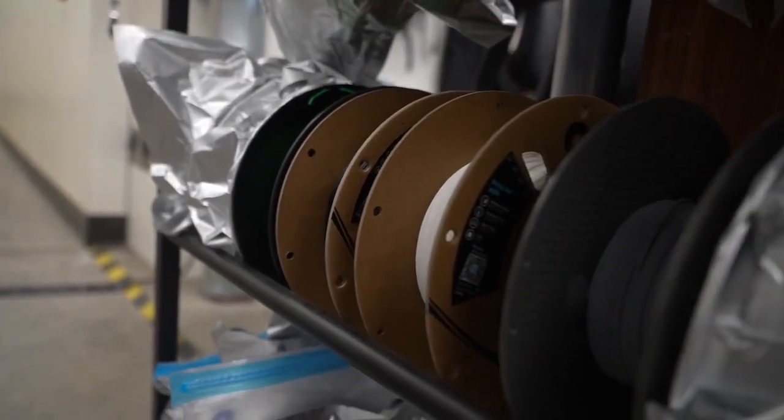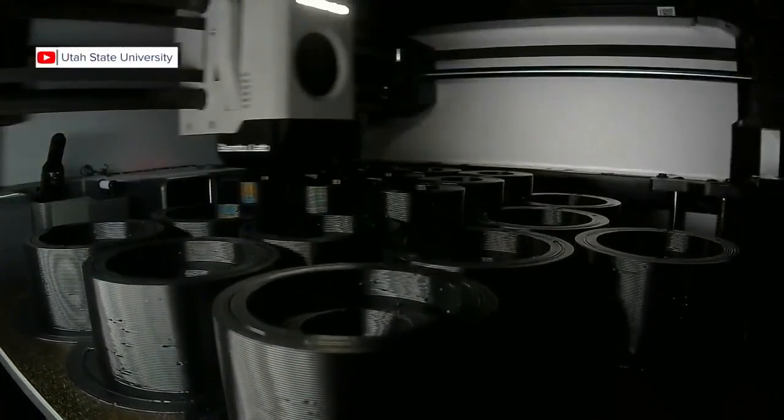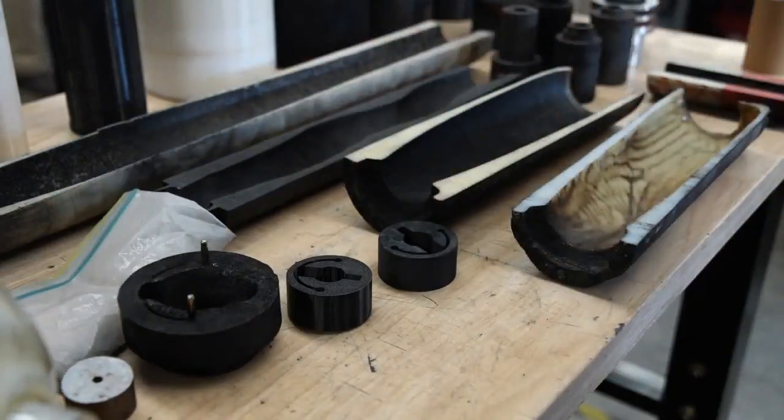It's called ABS plastic, acrylonitrile, butadiene, styrene. It's the same plastic that your Legos are made out of. You heard that right. With a simple 3D print of common plastics, they've literally used Legos to build a rocket.